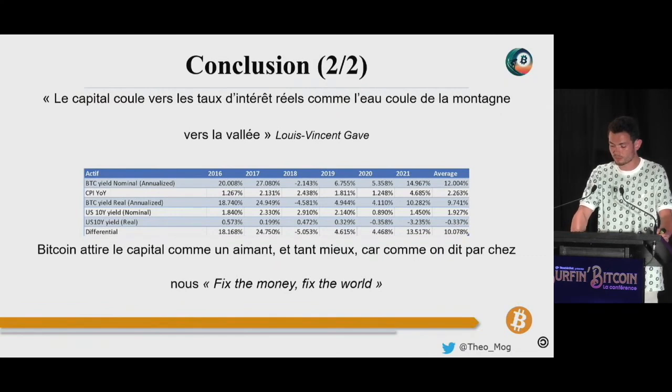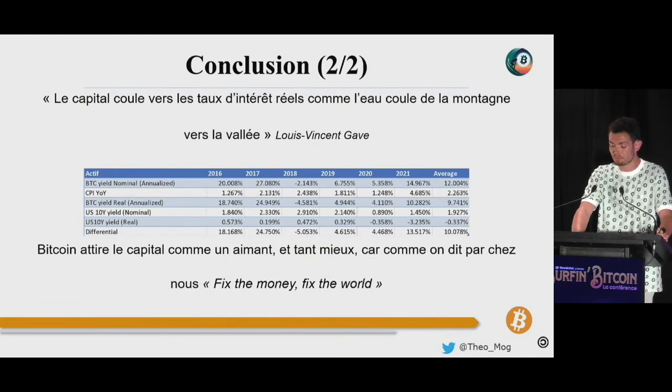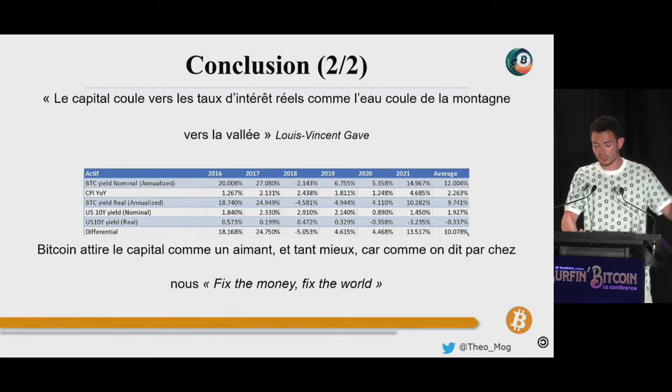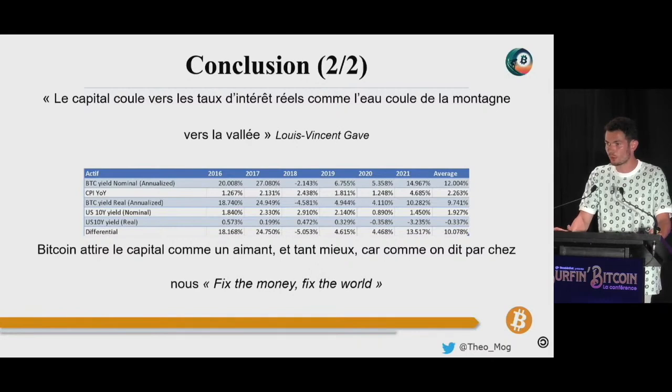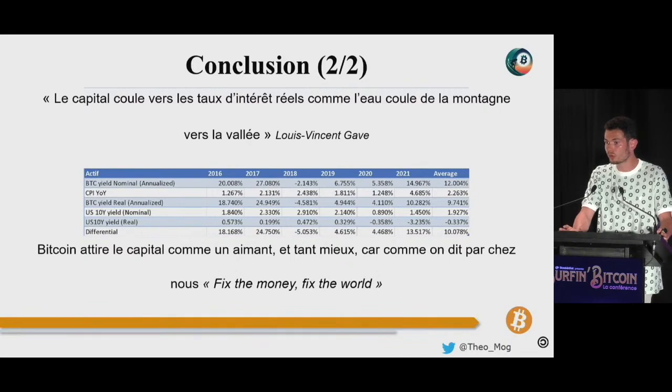À ceci, certains me répondront que Bitcoin est trop volatile pour servir d'épargne. Néanmoins, il est possible depuis des années de générer un revenu passif sur Bitcoin et sans être exposé à sa volatilité. Un tel placement, depuis qu'il est disponible, génère un rendement moyen d'environ 12%, ce qui fait un rendement réel annuel de 9,74%. En comparaison, le rendement réel moyen du bon américain à 10 ans, qui est l'instrument financier le plus liquide du monde, et donc celui utilisé comme benchmark en finance à peu près partout, et qui est censé être le plus sûr, était en rendement réel de moins 0,48%, coupons réinvestis.